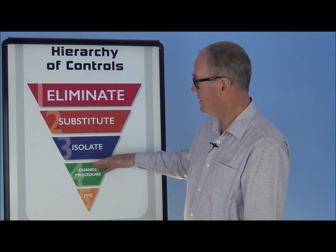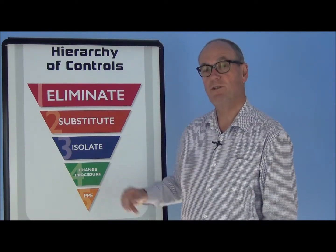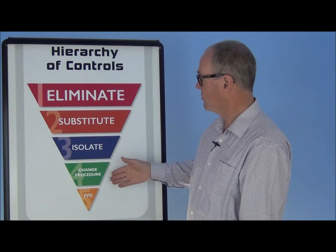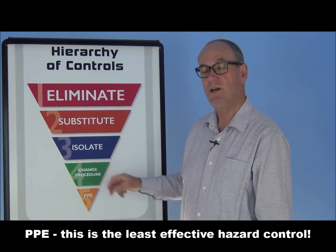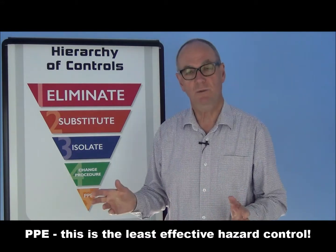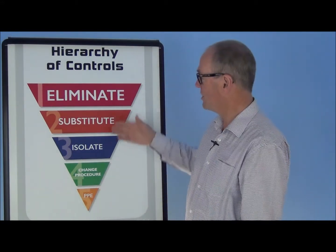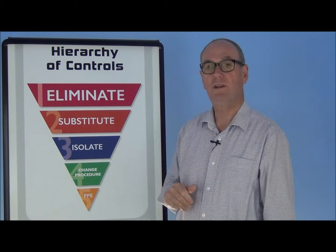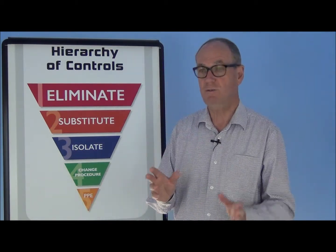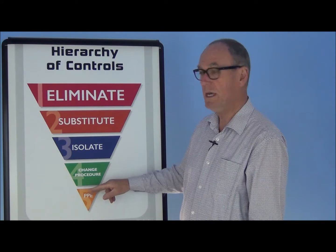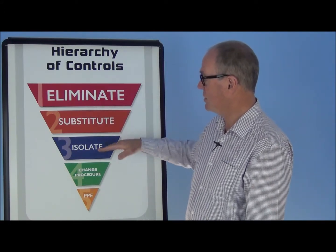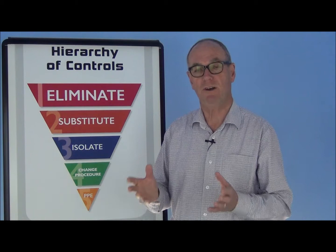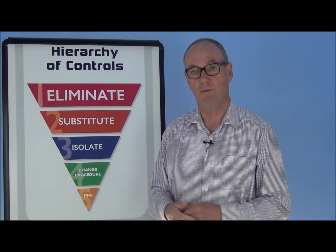Notice what's right at the bottom: personal protective equipment — often the very first thing that people go for, but in this hierarchy of controls clearly identified as the least effective means of managing a hazard. That doesn't mean it doesn't work, but we need to make sure that we've always looked at eliminate, substitute, isolate, and change your procedure before we think PPE is the only option. Often times you'll find it's not just a case of PPE alone — it's a case of having some form of substitution, some form of isolation, some form of procedure change, and PPE that you'll combine to successfully bring the risk down to an acceptable level in your workplace.